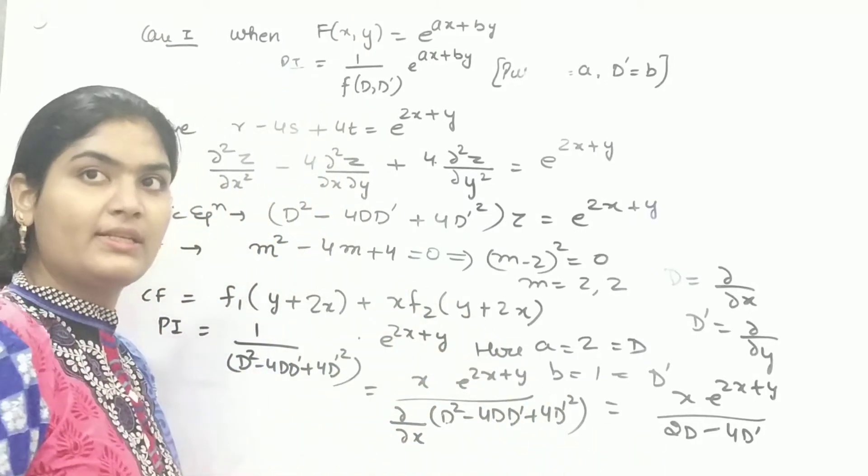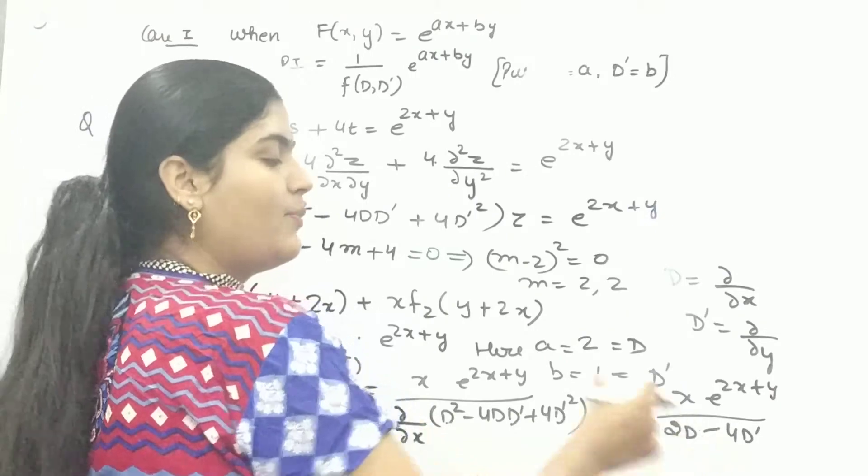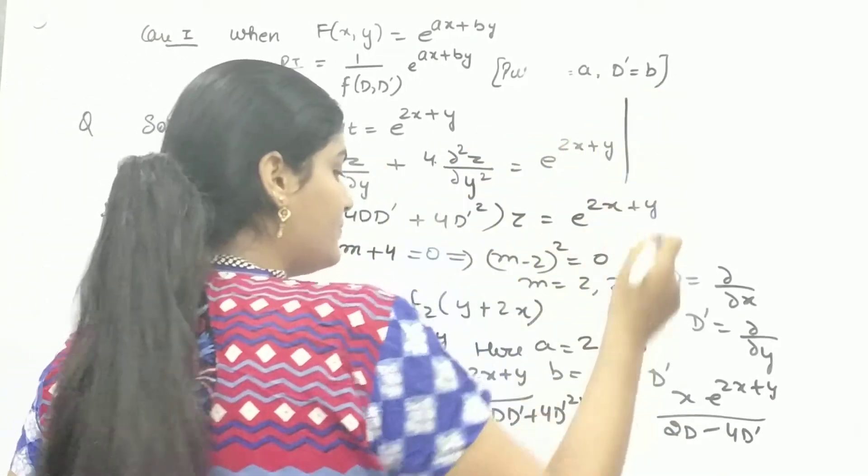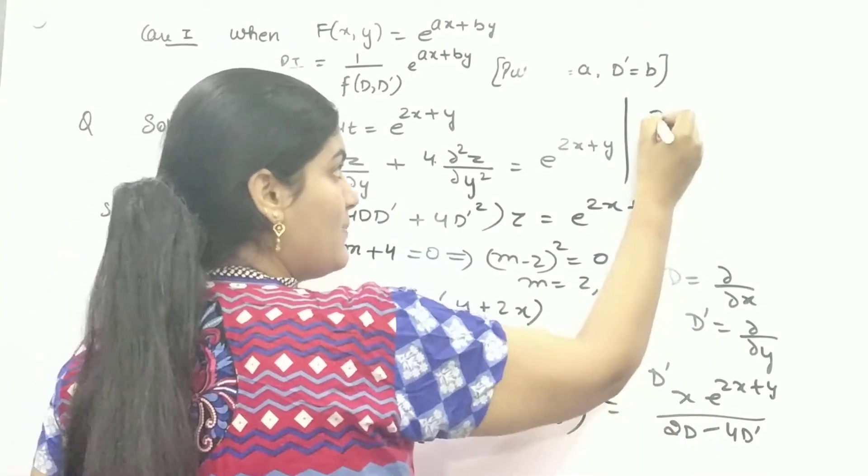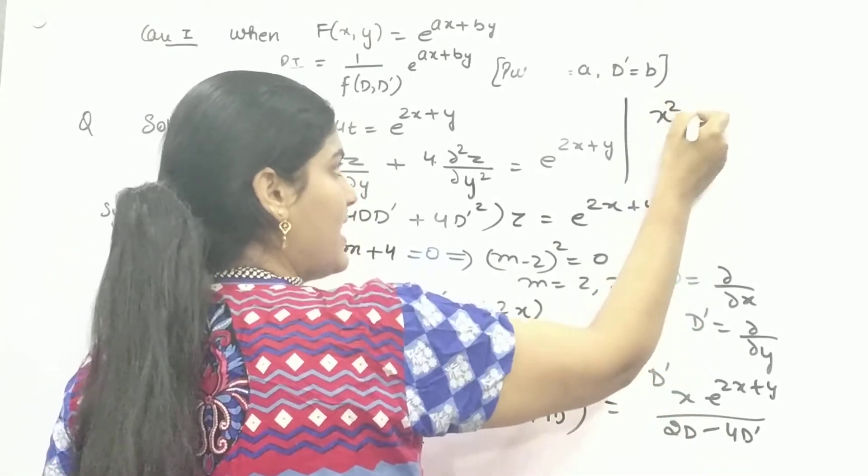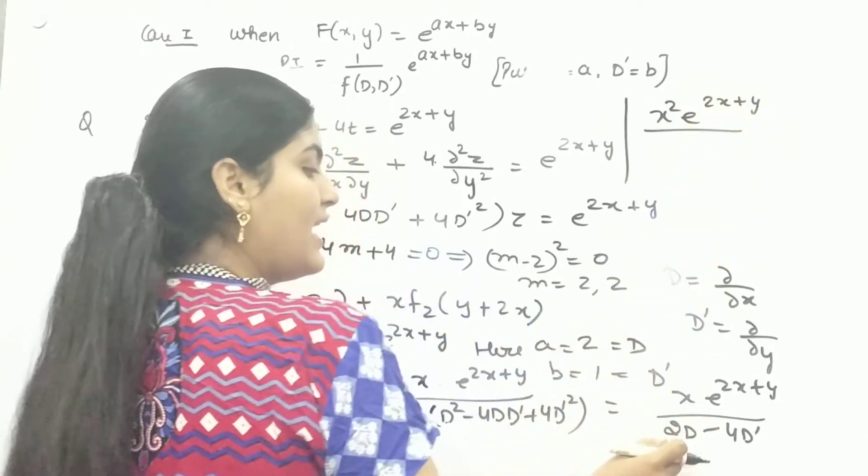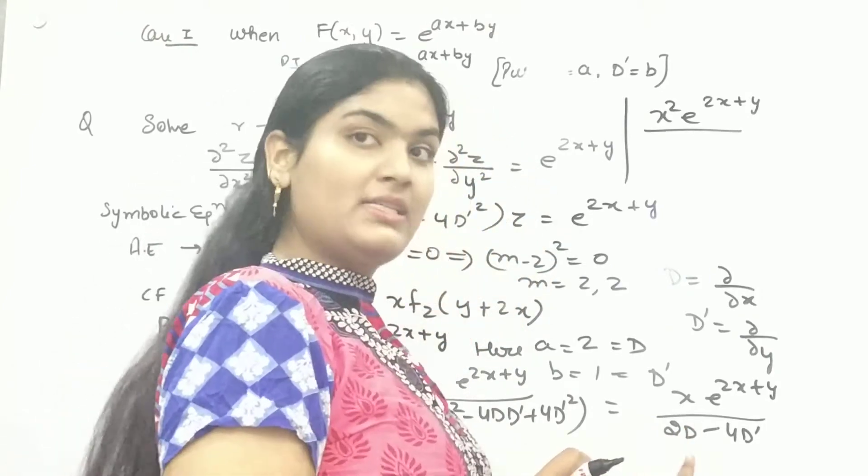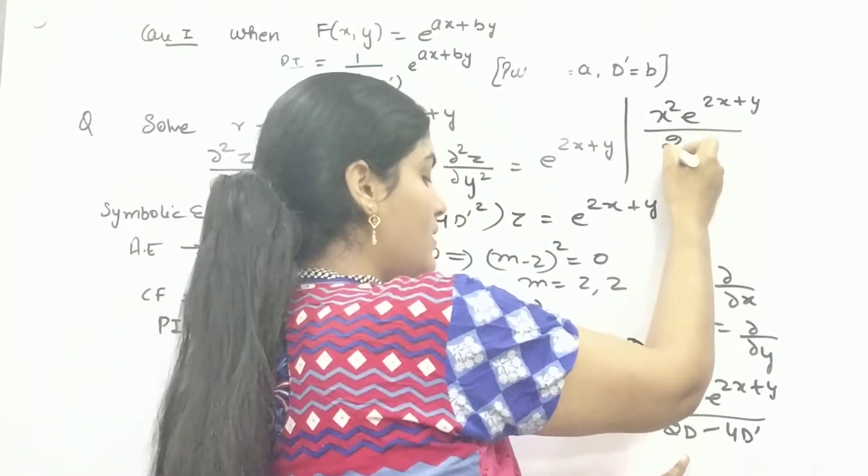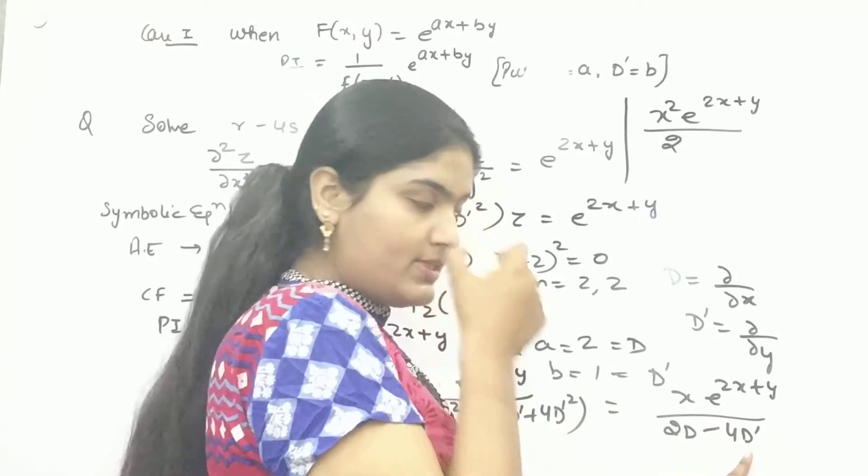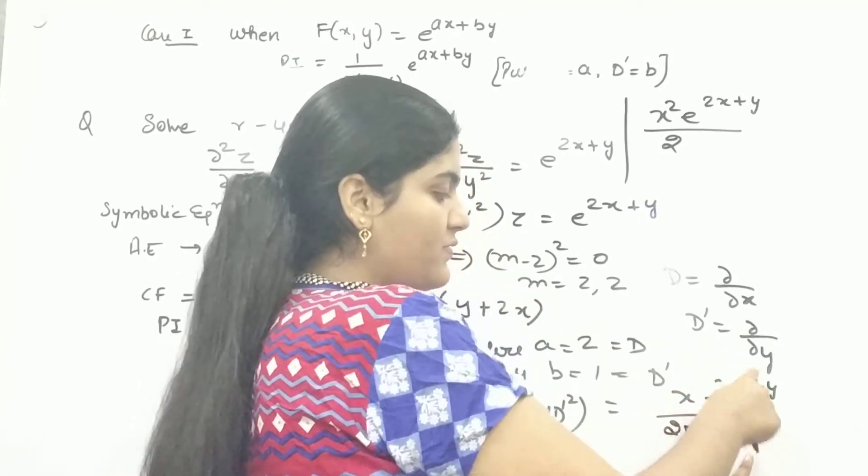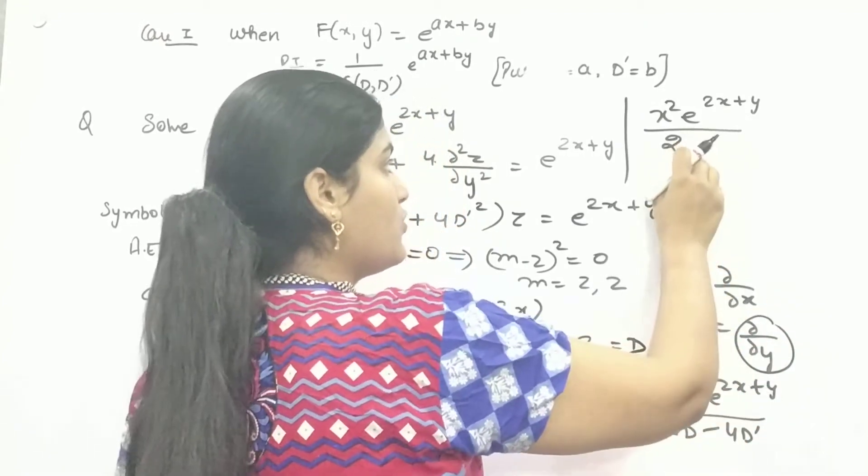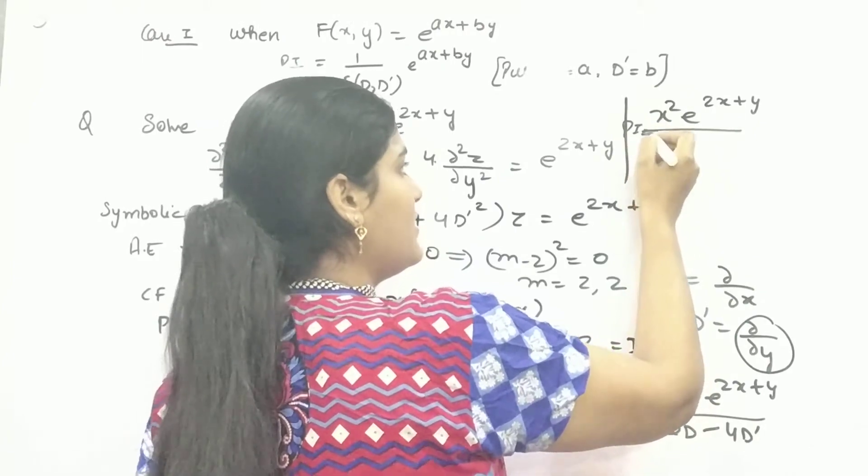So again, multiply with X in denominator. Take partial differentiation with respect to X. Multiply with X, so X into X is X squared. And again, differentiate with respect to X partially. So it is 2 and this is with respect to Y. Because it is partial differentiation with respect to Y, taking the partial differentiation with respect to X, it will be zero. So you will get this as your particular integral.